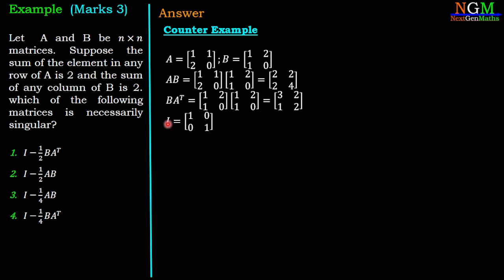The 2 cross 2 identity matrix is [1 0; 0 1]. Now we will check all the options one by one for singularity.